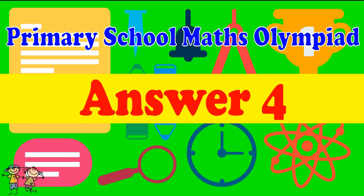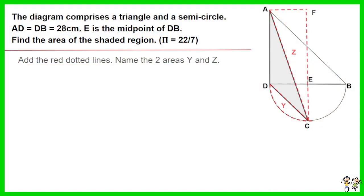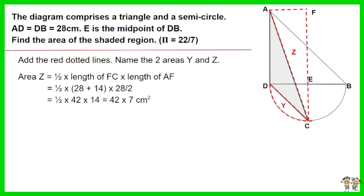Answer for question 4. Add the red dotted lines. Name the two areas Y and Z. Area Z equals half times the length of FC which is 28 plus 14 then times length of AF which is 28 divided by 2. Solve the equation. The result is 42 times 7 centimeters squared. Let's keep the result as multiple of 7 for ease of calculation later.